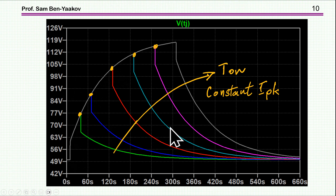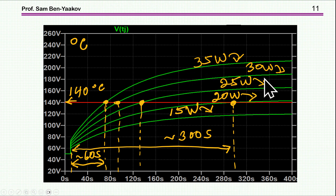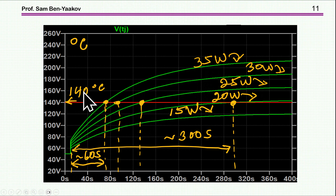You can also do other things with the model. Here I'm assuming a limit of 140°C and showing the response for different power pulse levels. For a 35-watt pulse, this system will sustain 60 seconds until the temperature rises to 140°C. But if the power is 20 watts, then the system can sustain a much longer pulse of about 300 seconds.